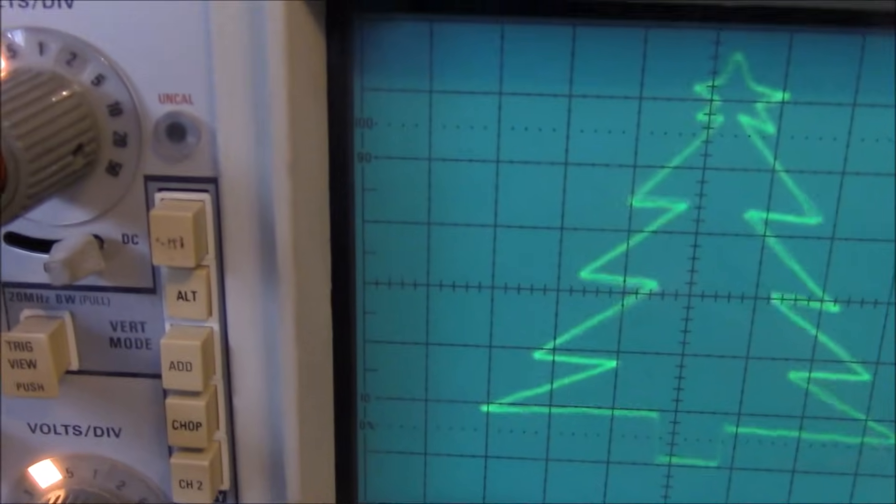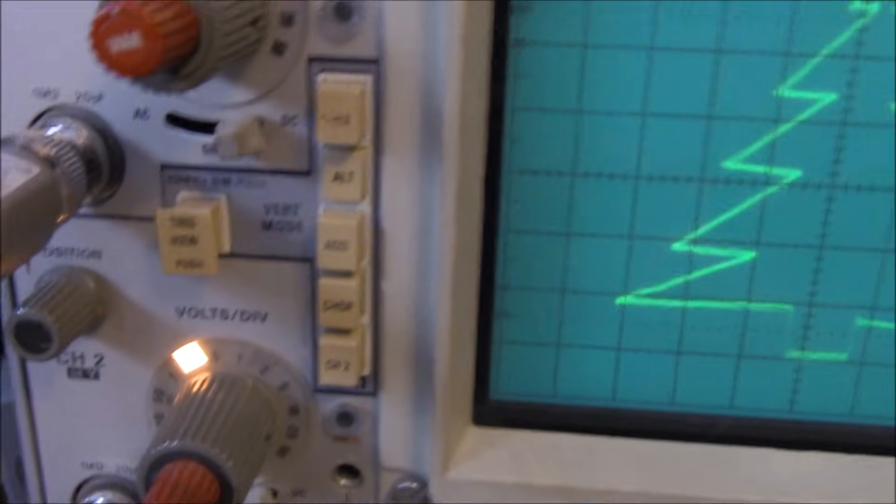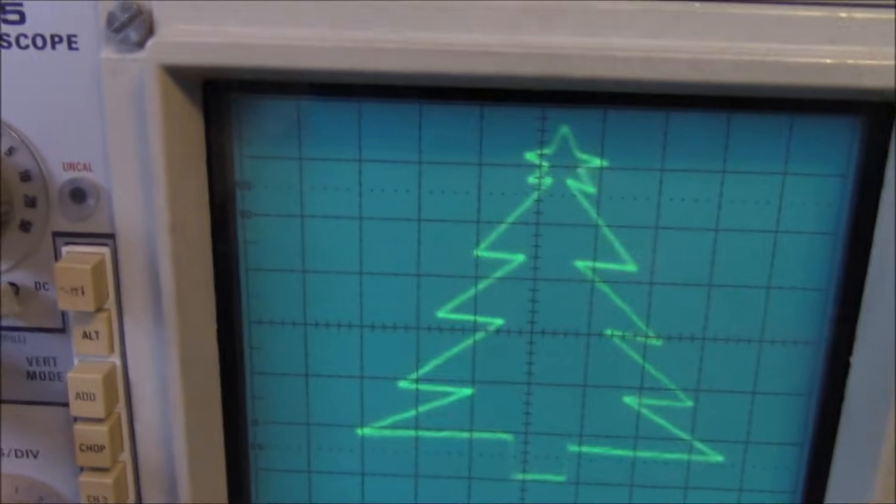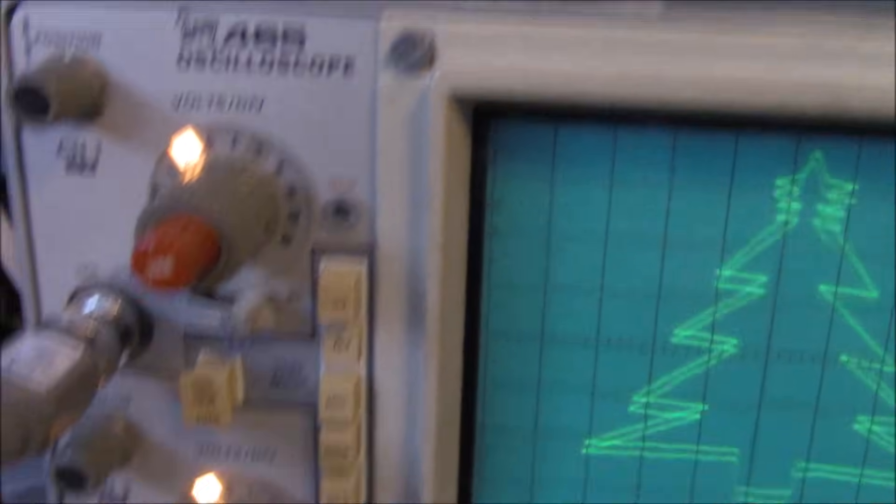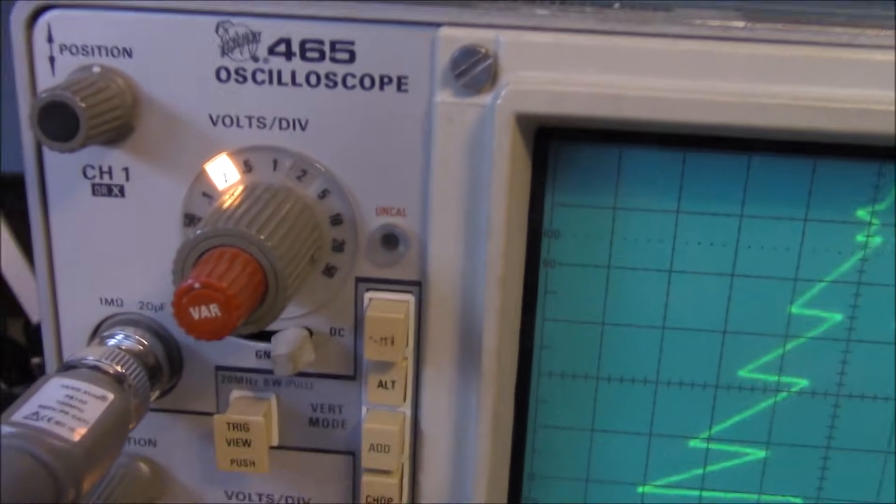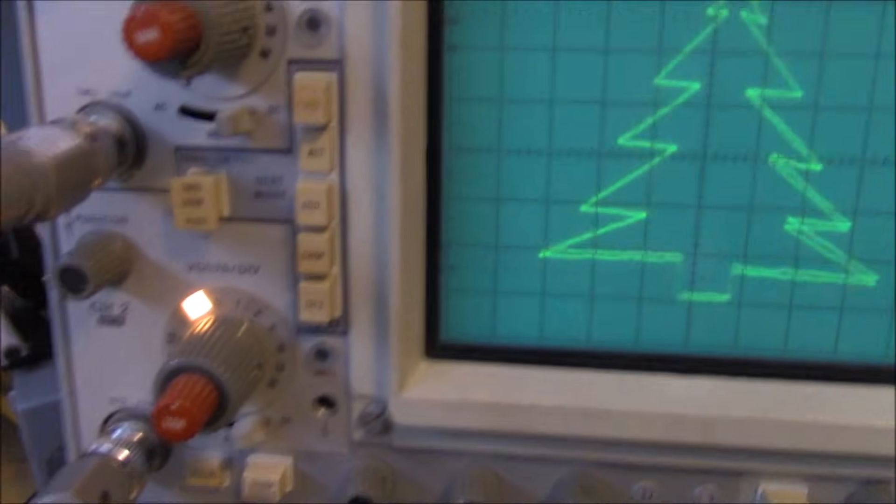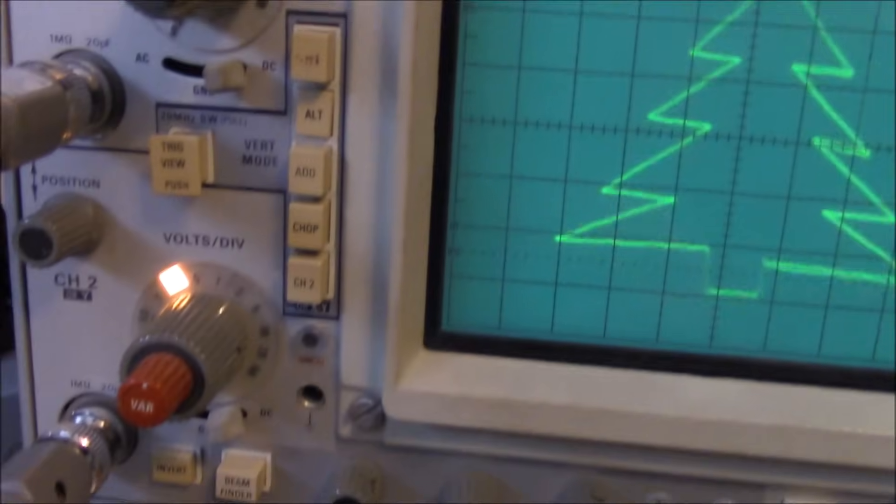And we are utilizing the alternate function. We have two channels here, so the trace alternates between channel 1 and channel 2, which are both set to 200 millivolts. The scope probes are on times one, and we are DC coupled, both channels.